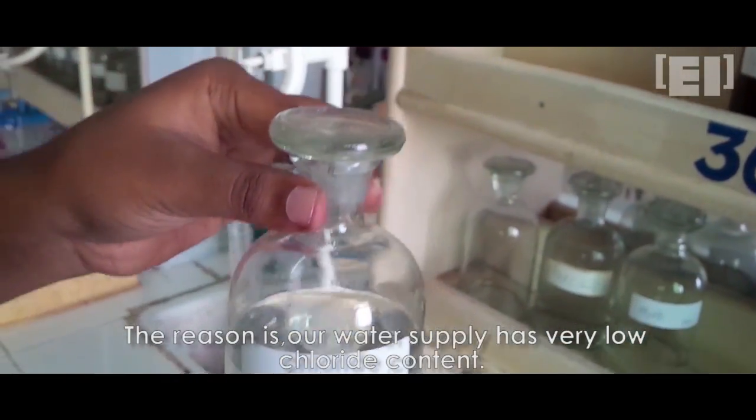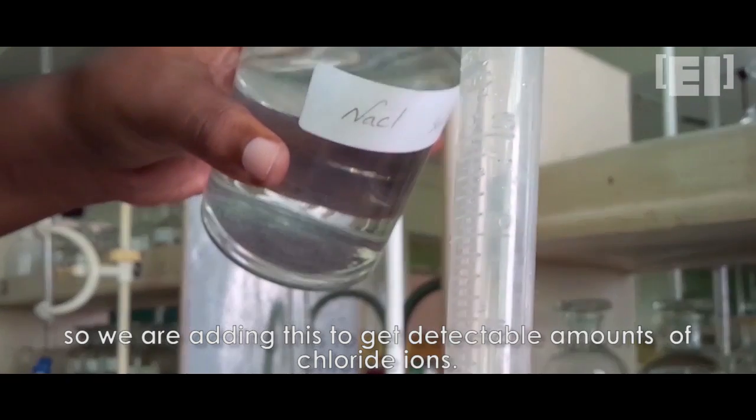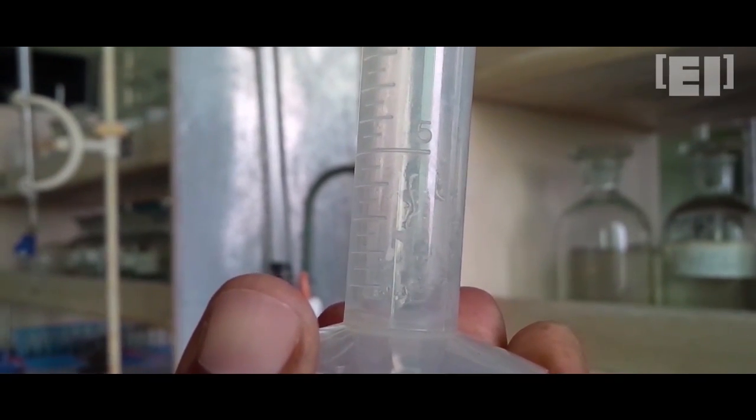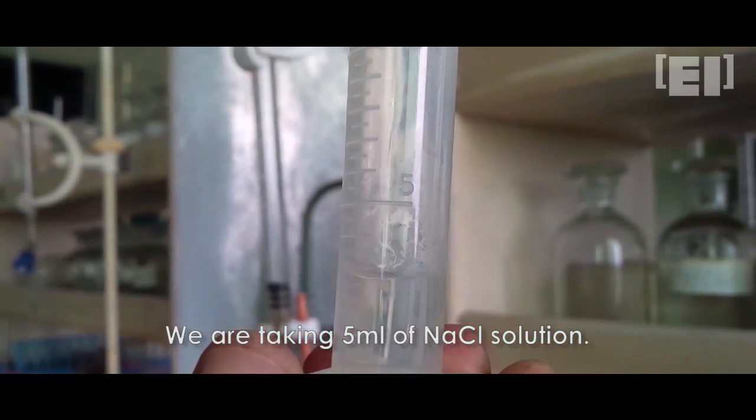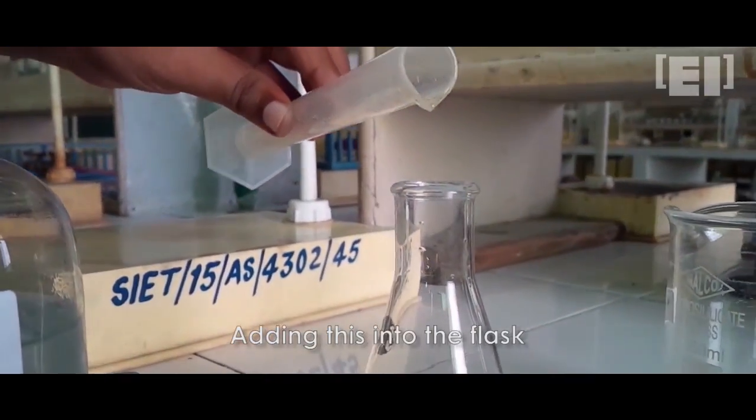Our water supply has a very poor amount of chloride ions, so we are adding external chloride ions. So taking 5 ml of NaCl solution in this cylinder, we'll pour this into the flask too.